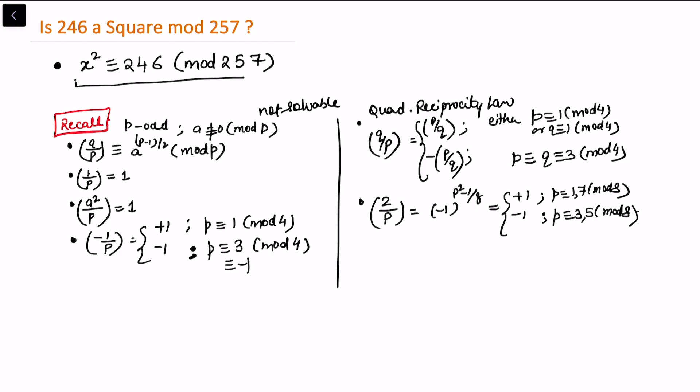To solve this, I am going to use properties of the Legendre symbol and quadratic reciprocity law that we covered in the earlier video. In addition to that, we also have this property: the Legendre symbol (a/p) is the same as (a/p)(b/p).